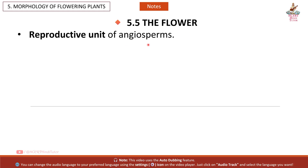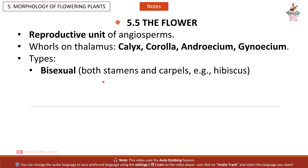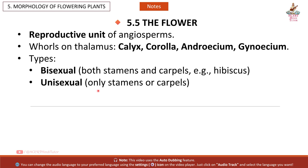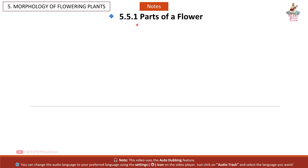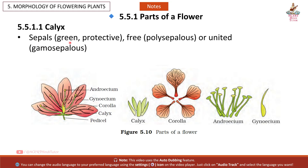5.5 The Flower: Reproductive unit of angiosperms. Parts borne on the thalamus: calyx, corolla, androecium, gynoecium. Types: Bisexual — both stamens and carpels, e.g. hibiscus. Unisexual — only stamens or carpels. 5.5.1 Calyx: sepals, green and protective; free (polysepalous) or united (gamosepalous).